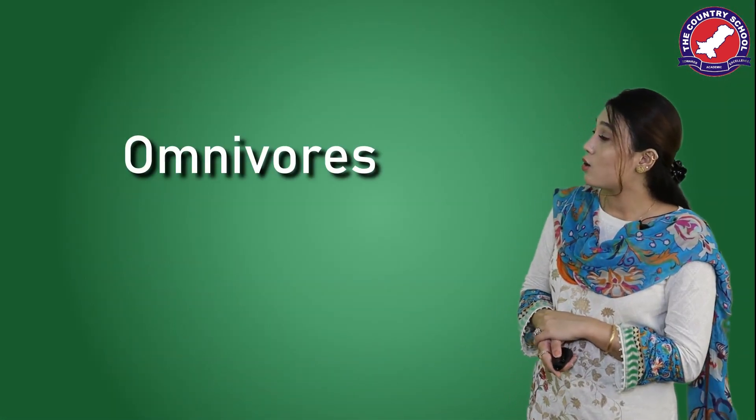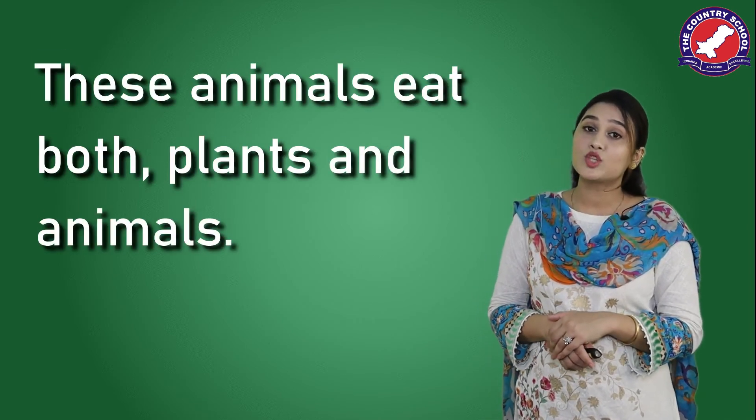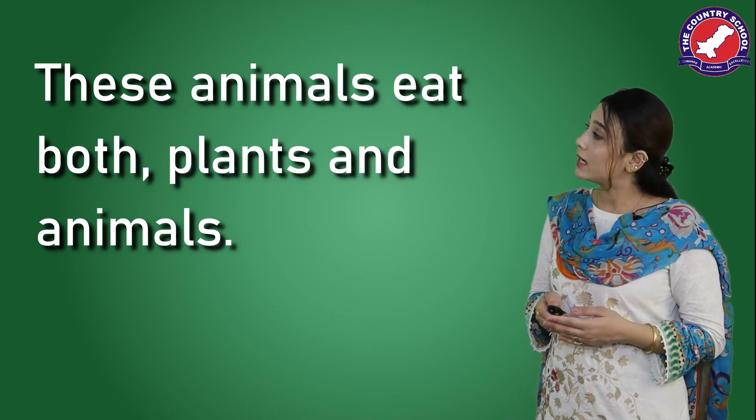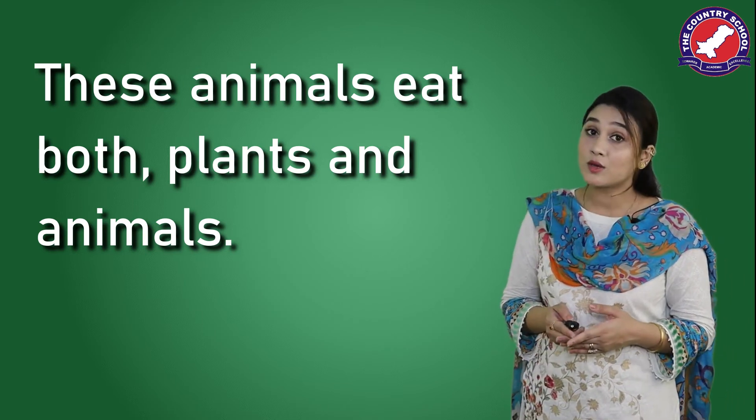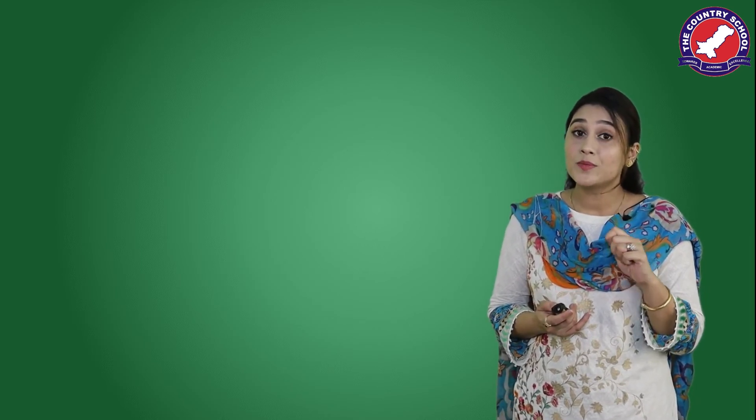The next are omnivores. Omnivores are those animals which eat both plants and animals. We humans are also omnivores — and so are bears and crows. We eat plants using our flat teeth and can also tear flesh using our canine teeth.